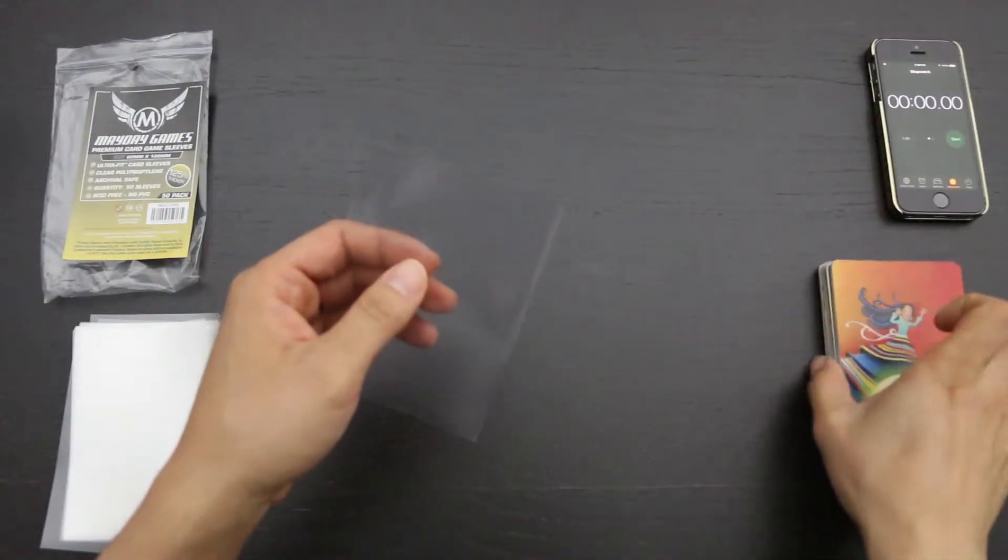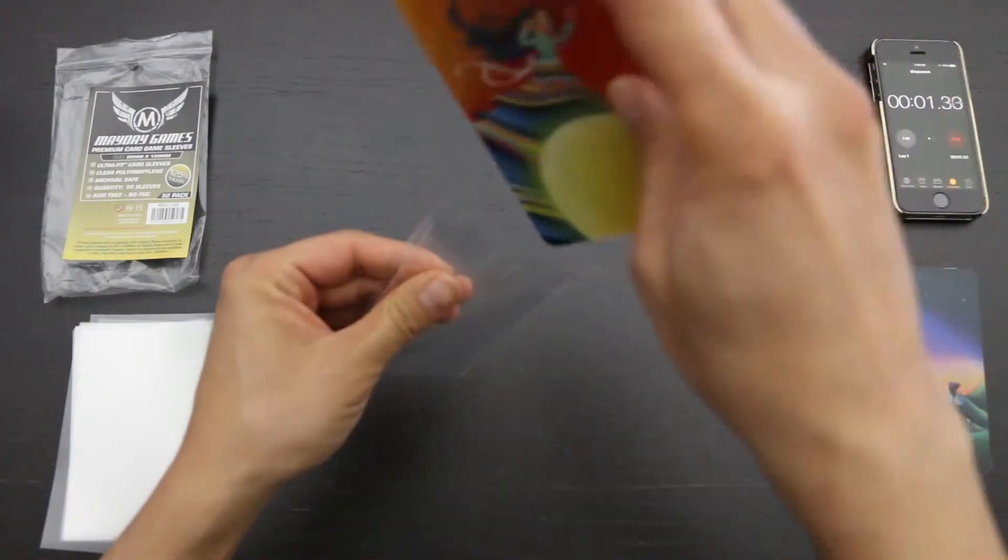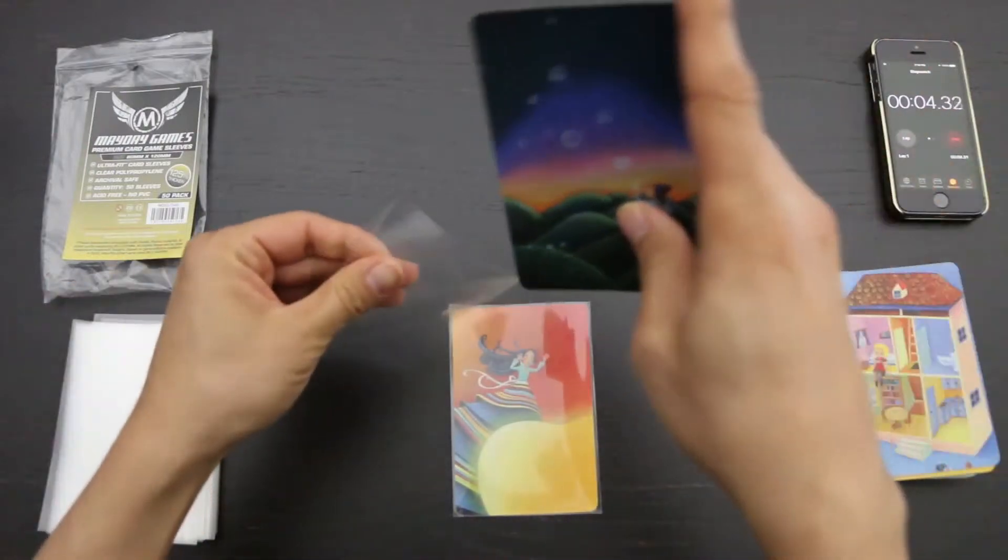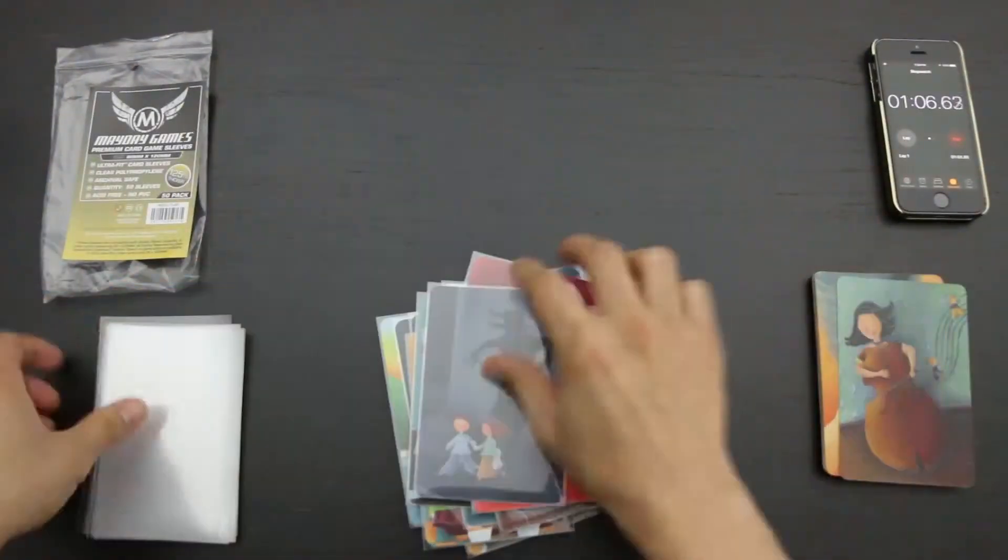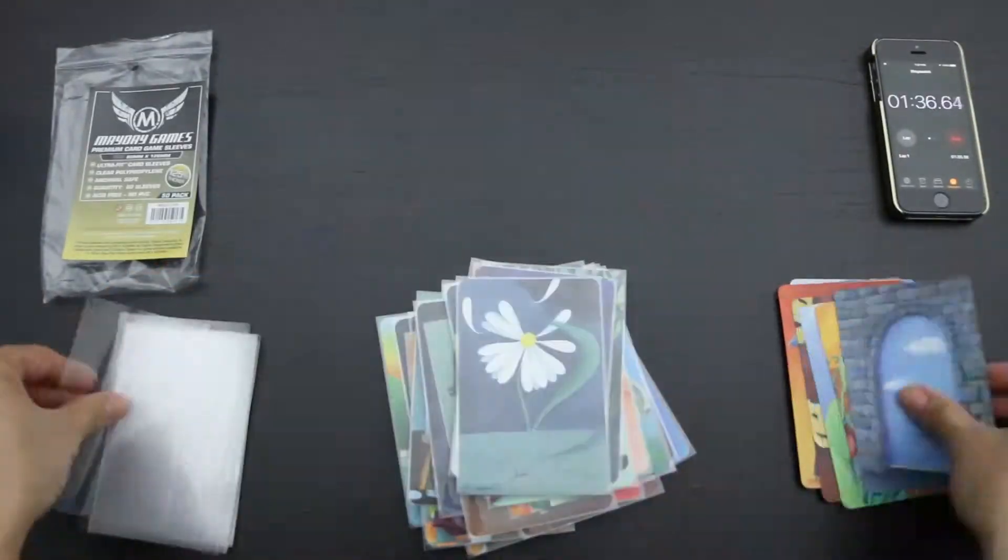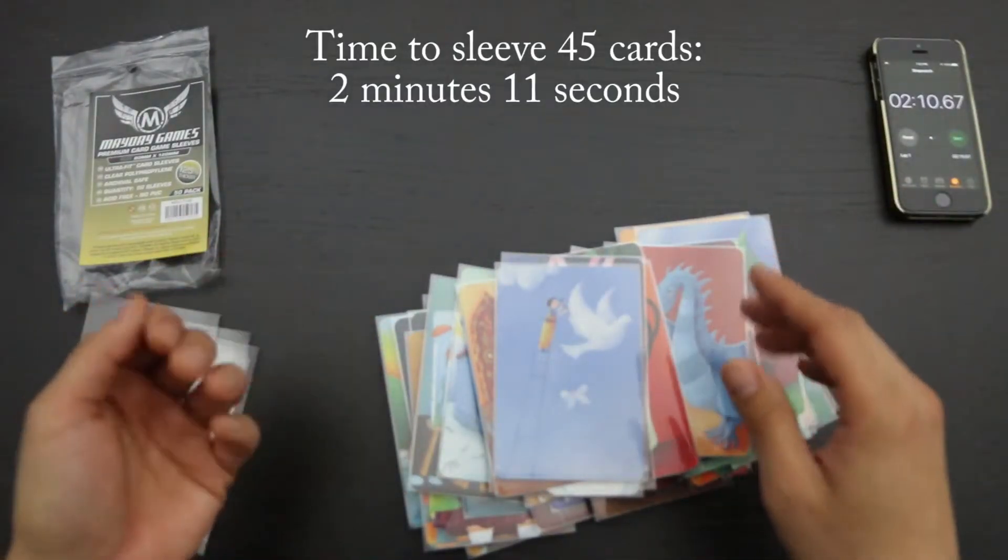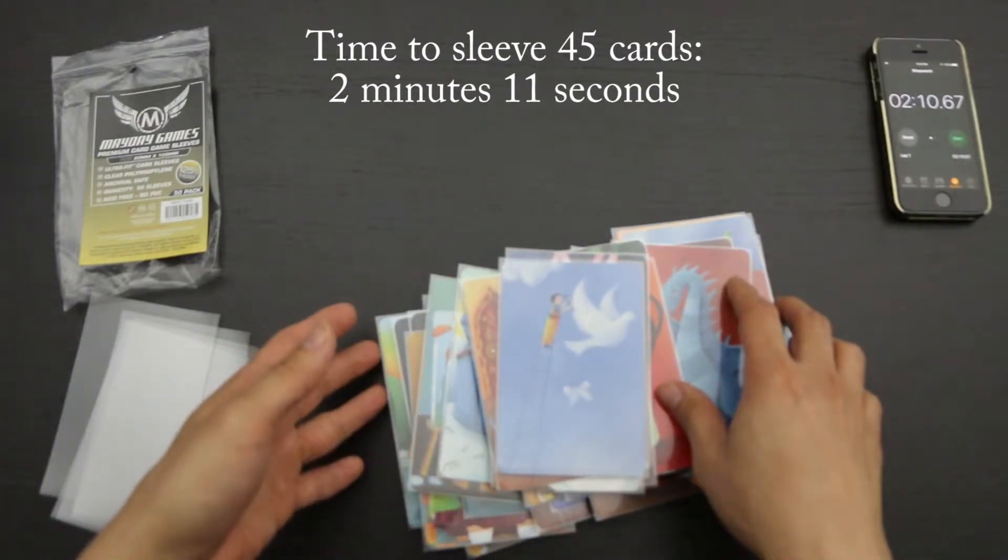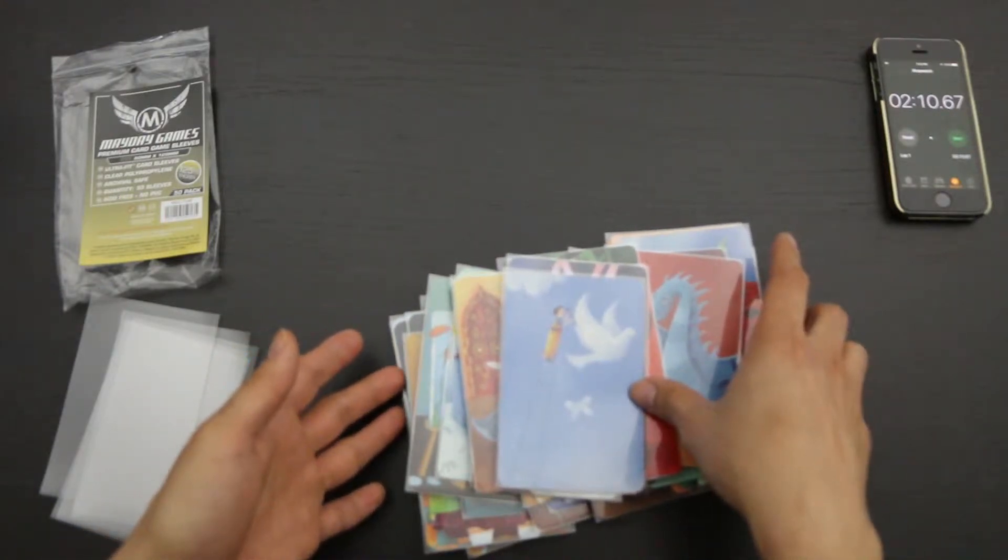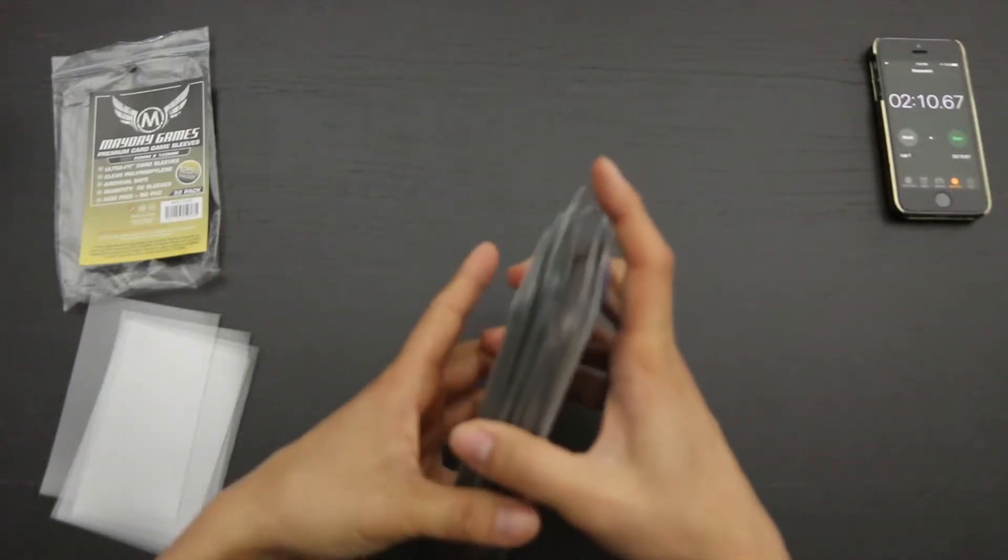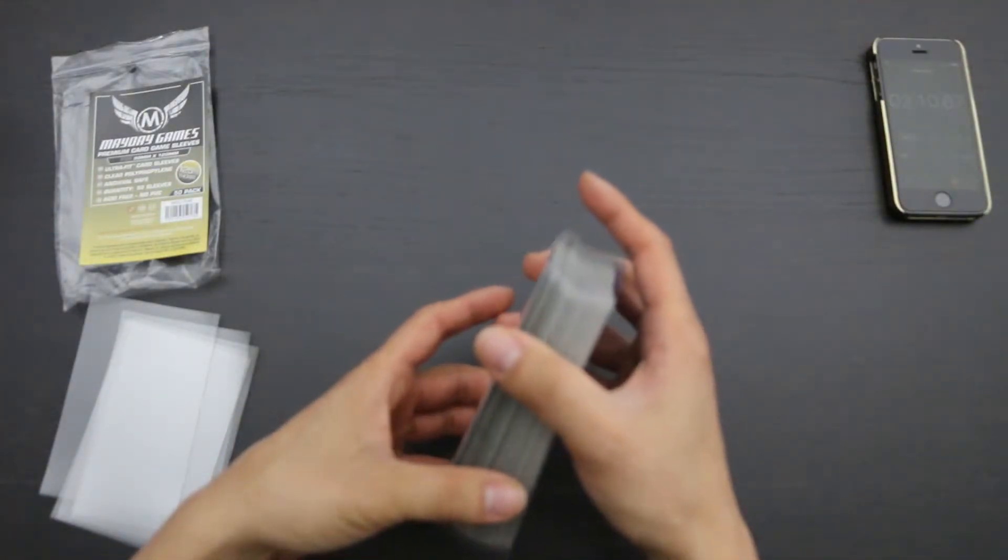Now it's time for the sleeving test. I'm going to sleeve these 45 Dixit cards in 45 of these sleeves and see how long it takes. Ready, set, go. It took 2 minutes and 11 seconds to sleeve these 45 cards, and that is a pretty respectable speed of 2.91 seconds per sleeve. This is about the same speed as its closest competitor, the Game Plus Products sleeves. And I didn't feel like I had any issues with sleeving these cards. I felt like the sleeves went in just fine. So I feel like the sleeving process for these sleeves in particular are pretty good.